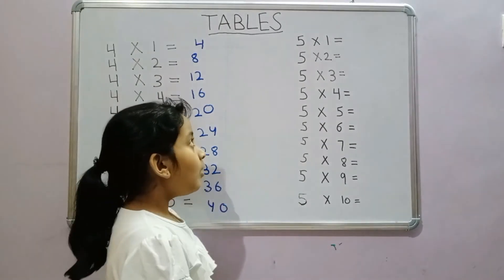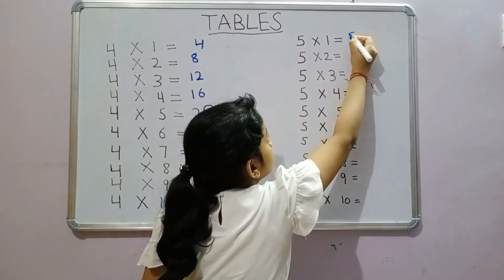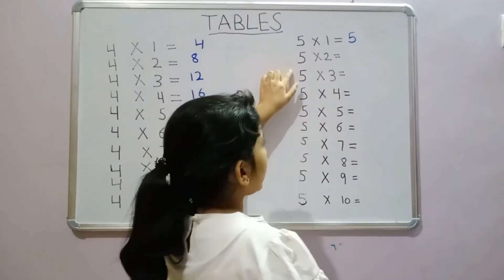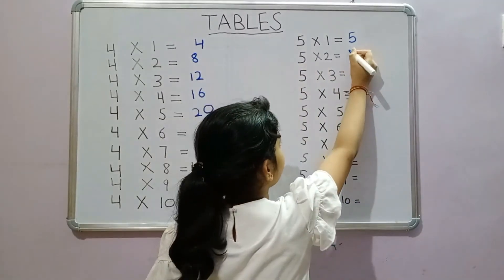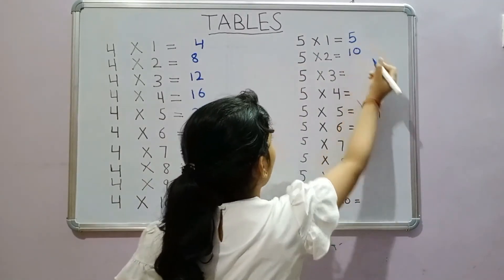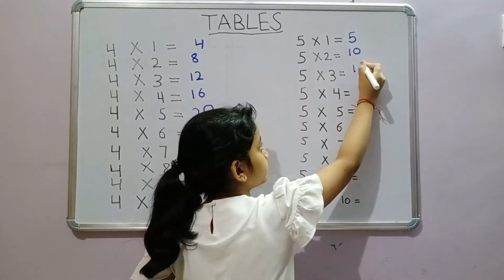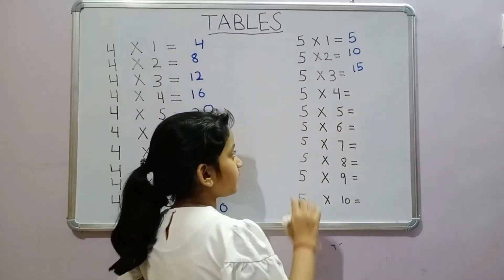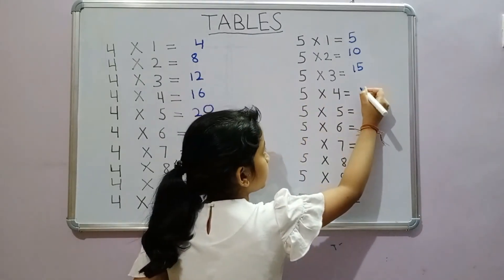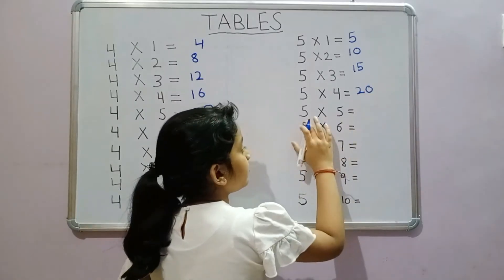5 wins the 5. 5 wins the 10. 5 wins the 15. 5 wins the 20. 5 wins the 25.